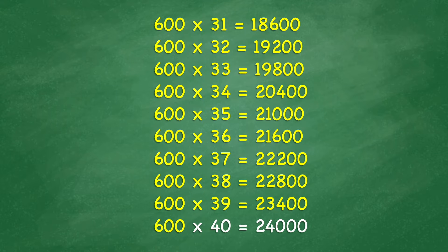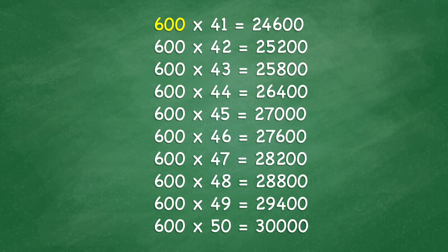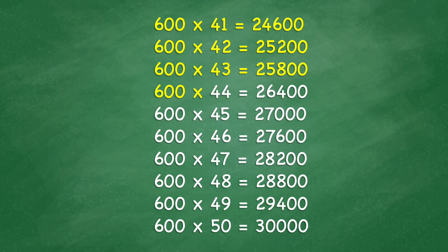600 x 40 equals 24,000. 600 x 41 equals 24,600. 600 x 42 equals 25,200. 600 x 43 equals 25,800. 600 x 44 equals 26,400. 600 x 45 equals 27,000.